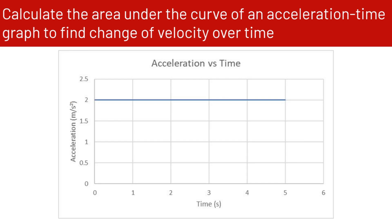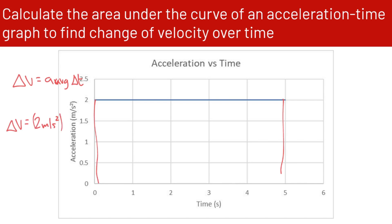First, let's do it mathematically. Delta v equals average acceleration times delta t. Our average acceleration is 2 meters per second squared, and our change in time is 5 seconds. That gives us a delta v of 10 meters per second. Pretty straightforward.